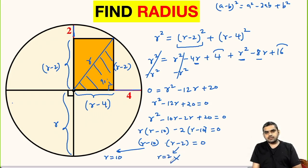But we have to reject r is equal to 2, because if we take r is equal to 2 then r minus 4 will be 2 minus 4, so this will be negative. Hence we discard this value.